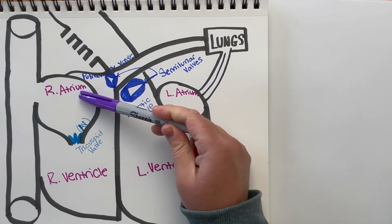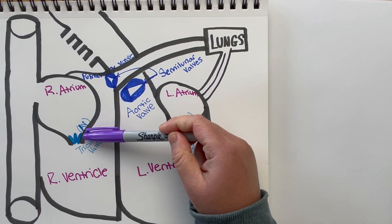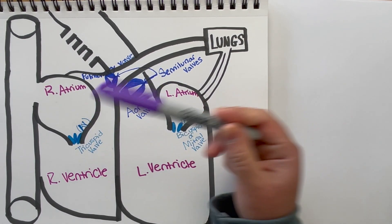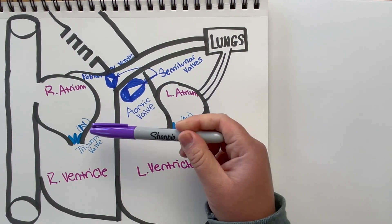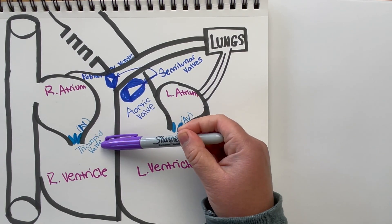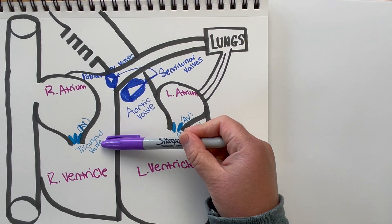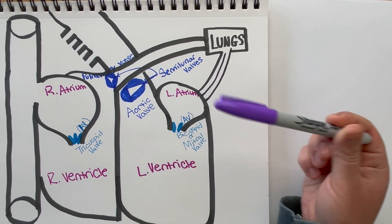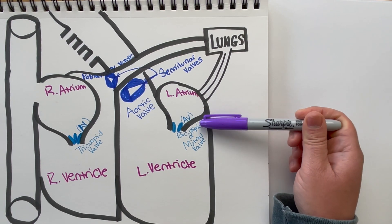And then we have our two AV valves — AV for atrio-ventricular because they separate the atrium and the ventricles. On the right side, we have our right AV valve, also known as the tricuspid valve, which separates the right atrium and the right ventricle. On the left, we have our left AV valve, also known as the bicuspid valve or the mitral valve, and this separates your left atrium from your left ventricle.